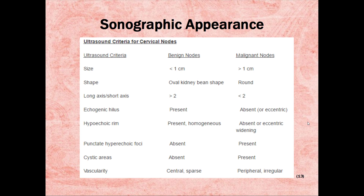Here are basic guidelines for assessing benign versus malignant nodes. Keep in mind, just because it appears to be benign, only a biopsy can tell. Benign nodes tend to be less than 1 cm, malignant greater than 1 cm. Benign are oval kidney bean shape, and malignant are round. Benign tend to have a long axis to short axis ratio of greater than 2, and malignant less than 2. Echogenic hilus is present in benign, and in malignant it is absent or eccentric. Benign hypoechoic rim is present and homogenous, and malignant is absent or shows eccentric widening. Benign have absent punctuate hyperechoic foci, and in malignant it is present.